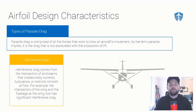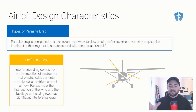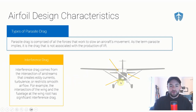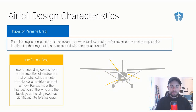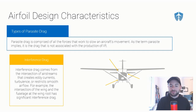The second subtype of parasite drag is interference drag. Interference drag comes from the intersection of airstreams that create eddy currents or turbulence, restricting smooth airflow. Anywhere you see hard angles where different aircraft components connect — like the wing root, the wing strut connecting to the fuselage, or the tail connecting to the empennage — the air in those areas creates eddy airstreams or turbulence. Because you don't have smooth airflow over these sharp angles, you get turbulence and that creates drag.